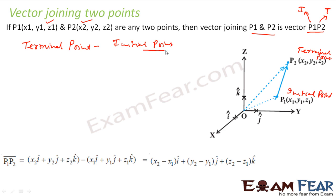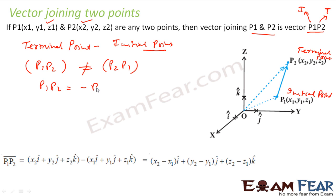Please pay a little attention here, because p1p2 and p2p1 are not equal. Actually, p1p2 is equal to minus p2p1. When you say p1p2, p1 is the initial point and p2 is the terminal point. The vector p1p2 starts from p1 and ends at p2, and you write it as terminal point minus initial point.